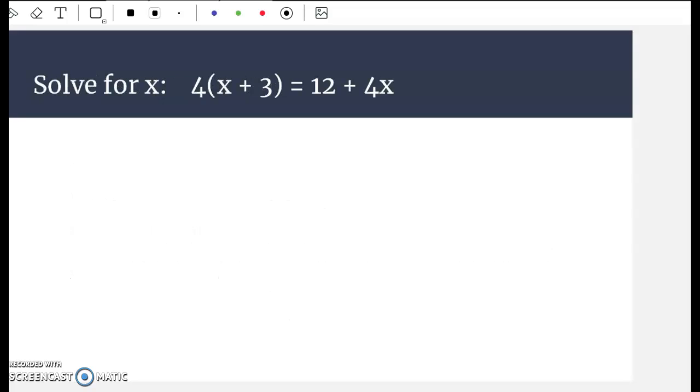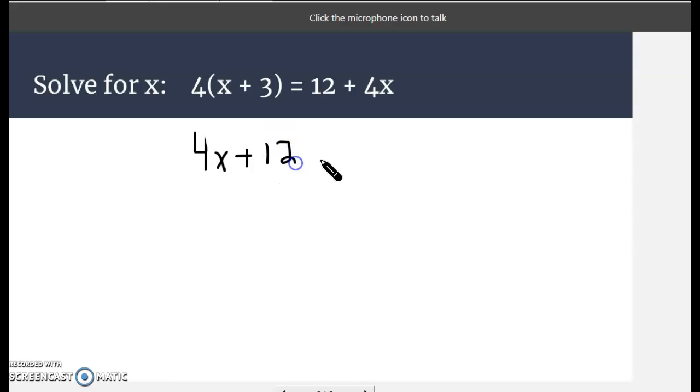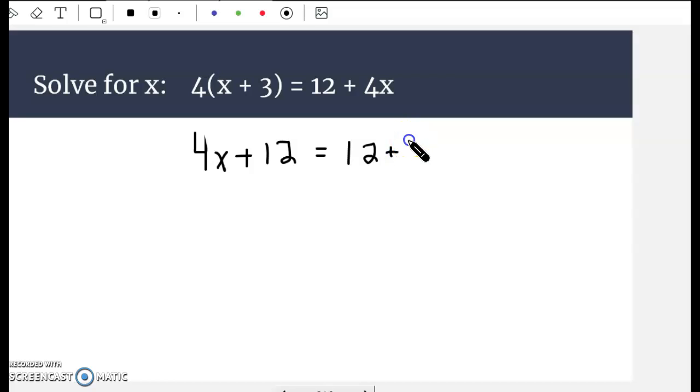Let's try this out. Notice variables are on both sides here. We have 4x plus 3 equals 12 plus 4x. I'm going to first distribute that 4 and get 4x plus 12 equal to 12 plus 4x.